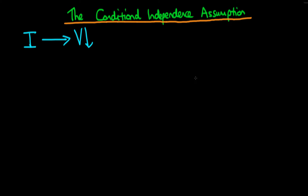In this video I want to talk about the conditional independence assumption and the role that this plays in the causal interpretation of econometrics. The idea here is that we're trying to evaluate whether infrastructure spending within a given district within a conflict area actually causes a decline in violence within that area.